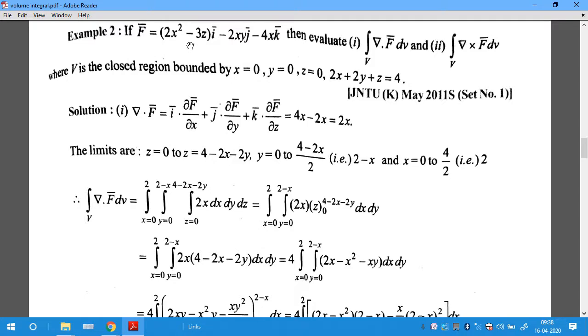We know that i·i=1, j·j=1, k·k=1, so we get the result 2x. This is the value of ∇·F̄.